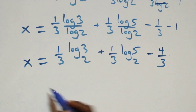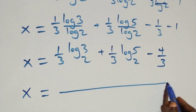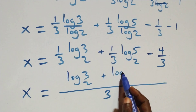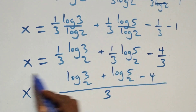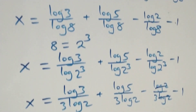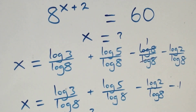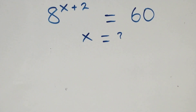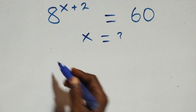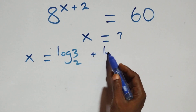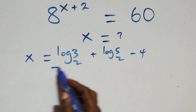We can now rewrite this, and what we have becomes x equals to (1/3)log₂3 plus (1/3)log₂5 minus 4 over 3. Bringing everything together as one fraction over 3, we have x equals to (log₂3 plus log₂5 minus 4) all over 3.